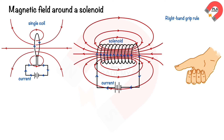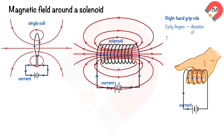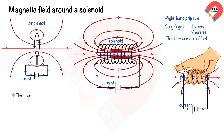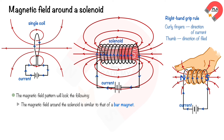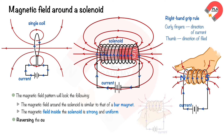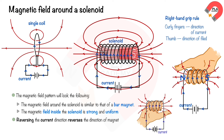The right-hand grip rule applies: the curled four fingers give the direction of the current in the solenoid, and the thumb points along the direction of the field. One end of the solenoid is the north pole and the other is the south pole. The field around the solenoid is similar to a bar magnet, and the field inside is strong and uniform. Reversing the current reverses the field direction; adding more turns increases the field strength.